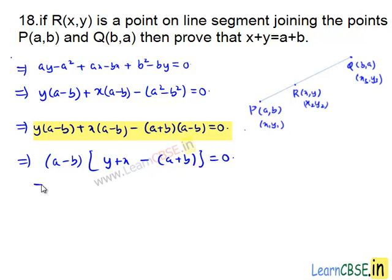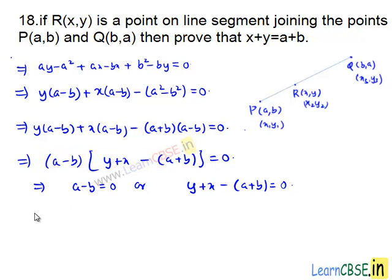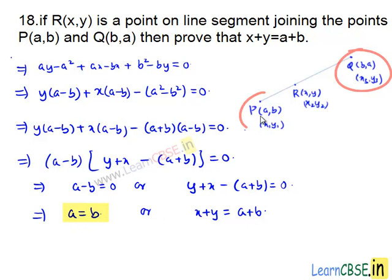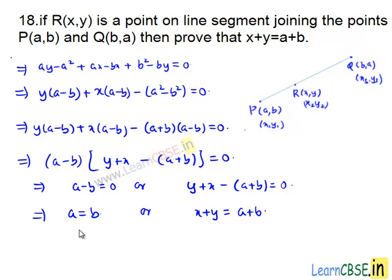This implies A minus B equals zero, or Y plus X minus (A plus B) equals zero. That is, A equals B, or X plus Y equals A plus B. If we take the first condition A equals B, the two points P(A, B) and Q(B, A) coincide, which means the first condition is incorrect. The required condition is X plus Y equals A plus B.